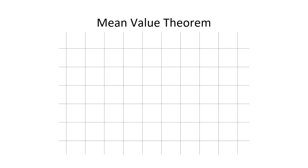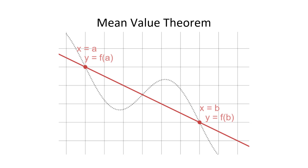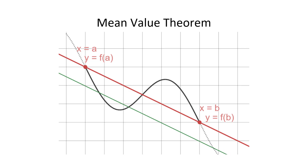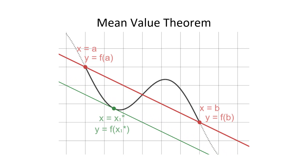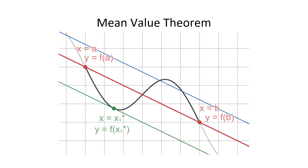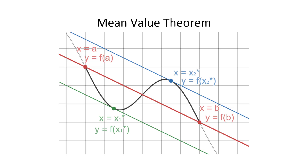Here is another example. We have a curve and two endpoints. The curve is differentiable between those points, so the mean value theorem says there is at least one point on the curve where the tangent line has the same slope as the line between the two endpoints. In this case, there are two points where the tangent line has that slope. The mean value theorem does not say how many such points the function will have. The theorem simply guarantees that there will be at least one.